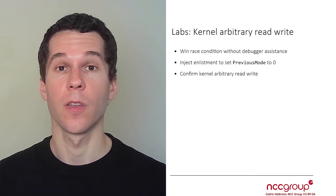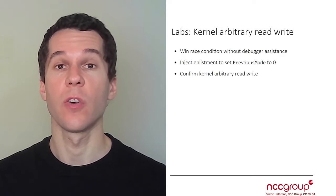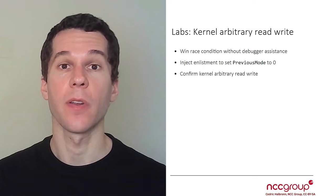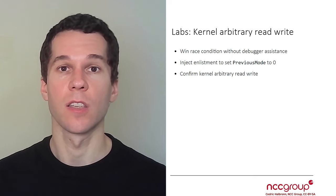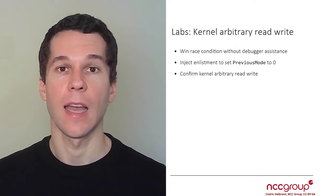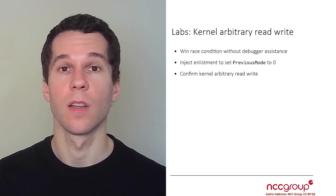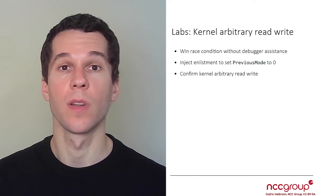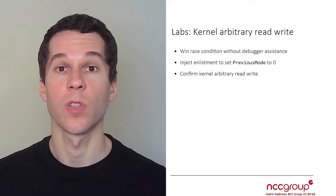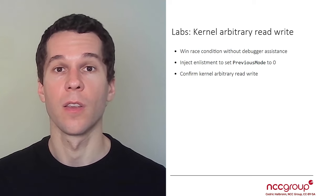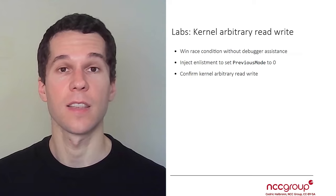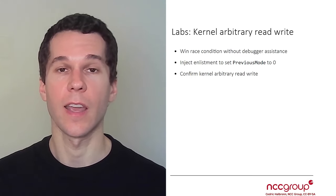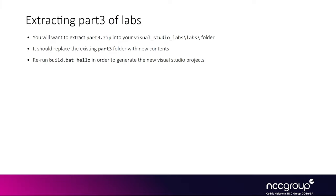In this lab, you're going to experience how to get an arbitrary read/write primitive into the kernel. You'll experience how to effectively win the race condition without the assistance of a debugger. You'll implement two things: once you win the race condition, first use the write-zero primitive to override previous mode for your own recovery thread, and then confirm you have an arbitrary read/write primitive into the kernel.